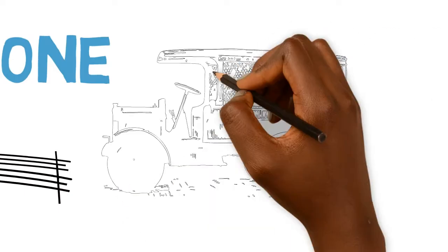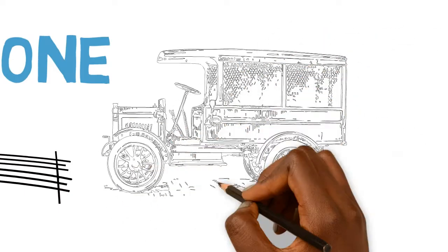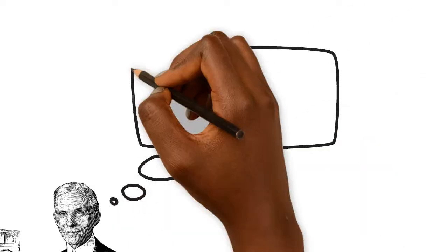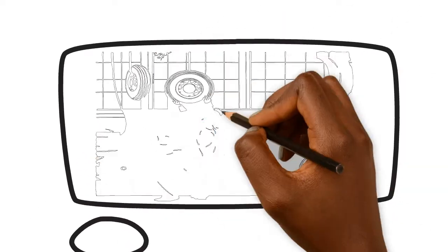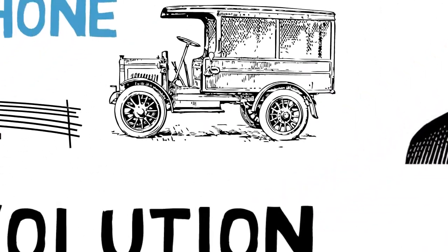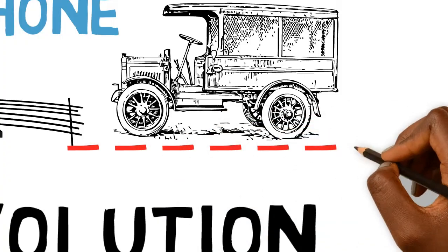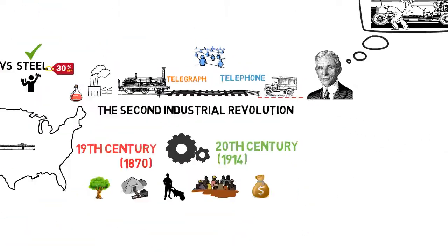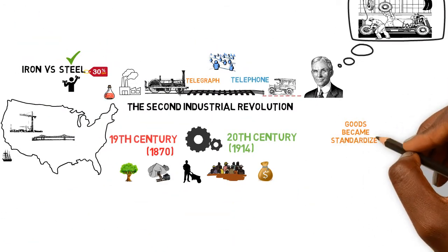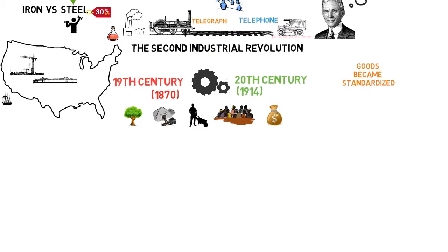The train was then replaced by the automobile, and Henry Ford revolutionized mass production in manufacturing with the introduction of the assembly line to produce the Ford T-Model. All kinds of goods also became standardized for the first time during this period.